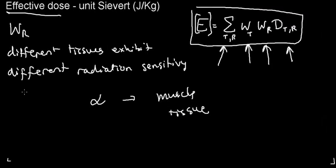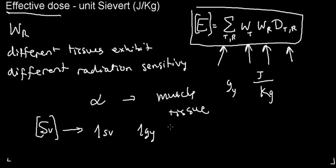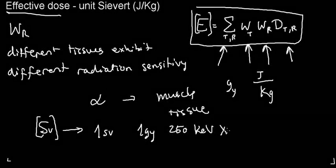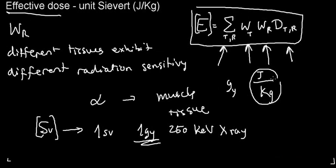Sieverts measure damage to human tissue, unlike gray which measures energy change over mass. One sievert is defined as the damage that one gray of 250 kiloelectron-volt x-rays would cause in human tissue. This is why sieverts are the units heard in news coverage of events like the Fukushima disaster in Japan.